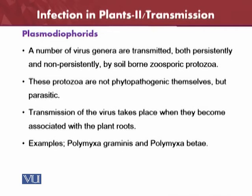Plasmodiophorids are transmitted both persistently and non-persistently by soil-borne zoosporic protozoa. These protozoa are not phytopathogenic themselves but are parasitic, and they can transmit disease in a manner similar to nematodes — either persistently or non-persistently. Transmission takes place when they become associated with plant roots, as they feed on roots. Examples include Polymyxa graminis and Polymyxa betae.